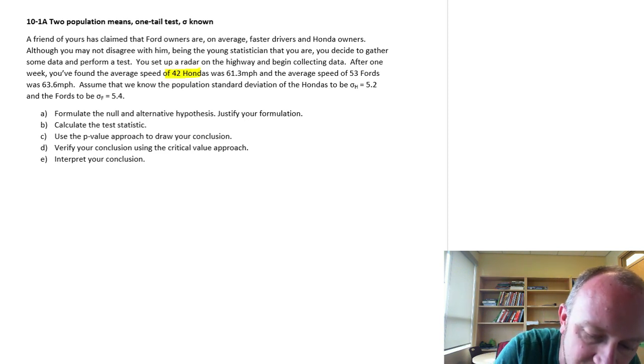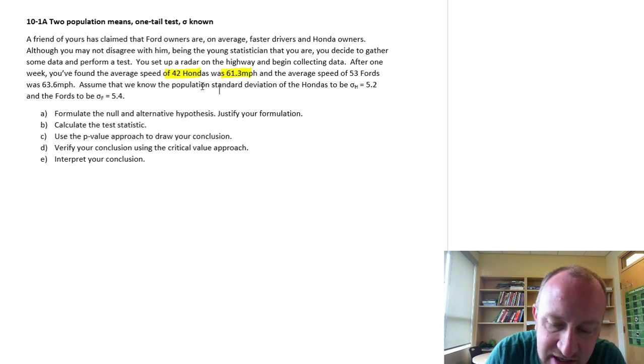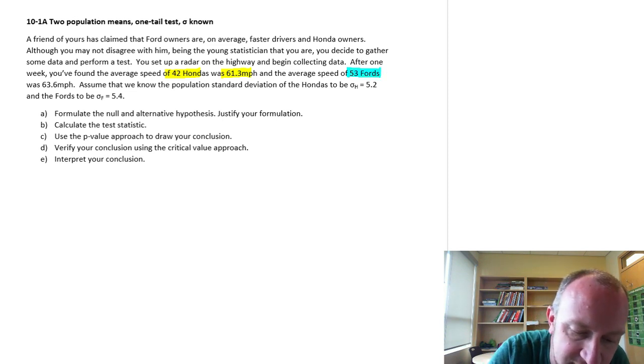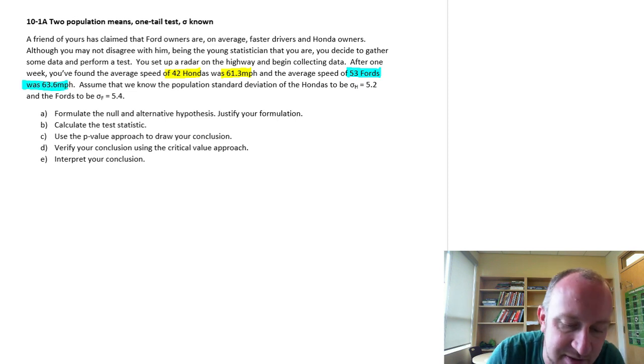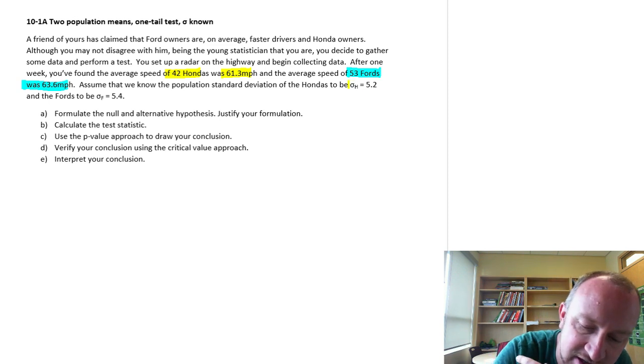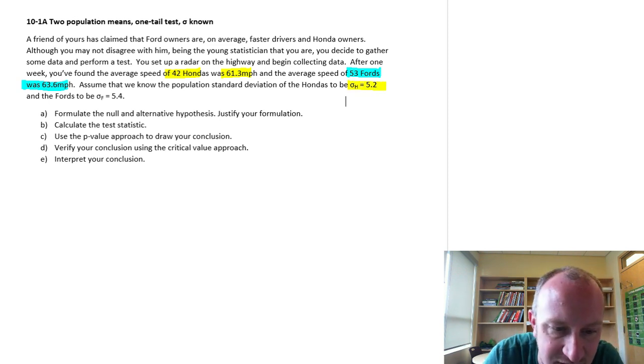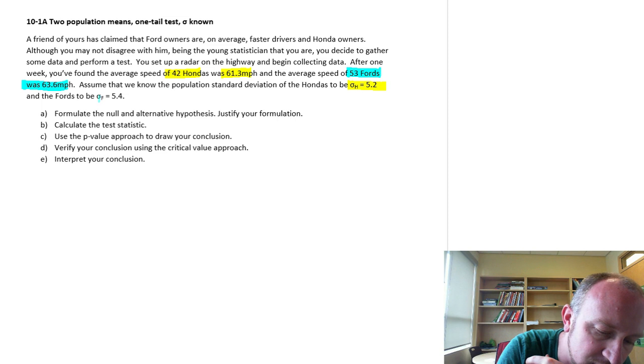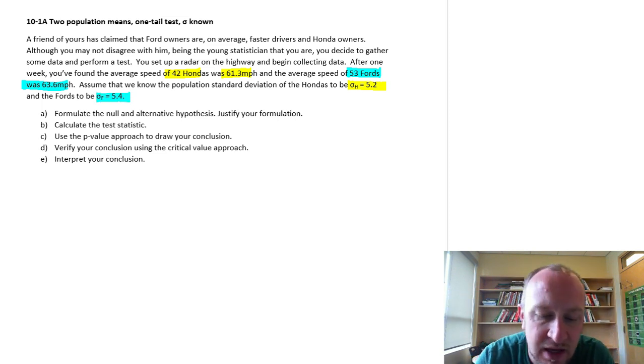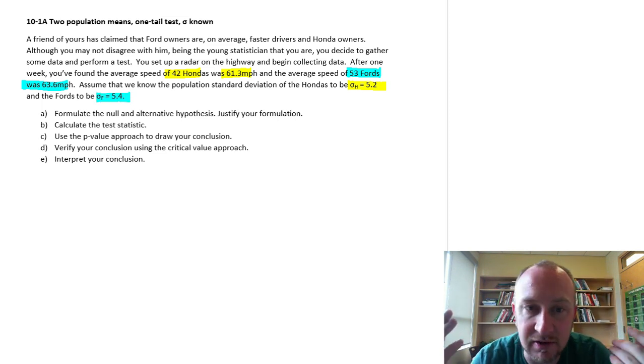The average speed of 42 Hondas was 63 miles per hour and the average speed of 53 Fords was 63.6 miles per hour. And we know the population standard deviation of the Hondas is 5.2 and for the Fords it's 5.4. Okay, so we've got here now all of our sample data.